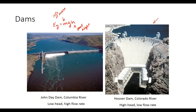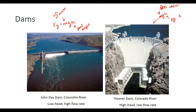Alternatively, there's a high head dam — like the Hoover Dam on the right. You can see how tall it is. Back to mgh, it has a lot of H, so it can let less water through, meaning less mass. In Colorado, for example, water is scarcer and the river doesn't flow as fast, but because the landscape is steeper, they can have a taller dam with less water volume. Those are your two different types of dams.